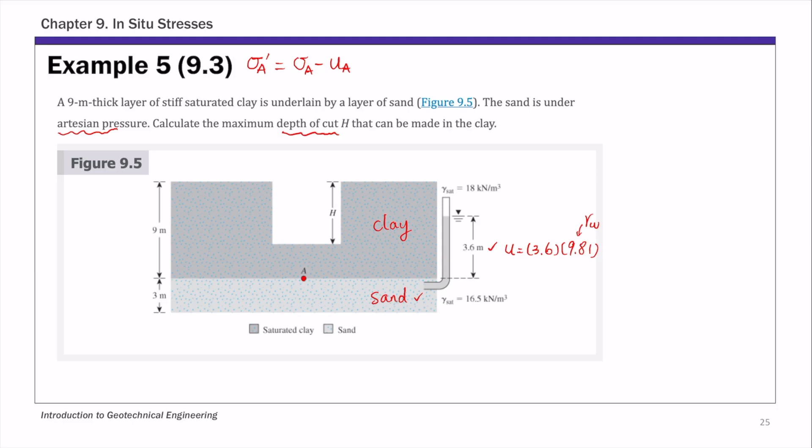which is basically 3.6 times 9.81. At the bottom of this excavation, as you remove soil on top, you're basically reducing this sigma A. So you're removing the weight on top, so sigma A decreases. And the pore pressure U A stays constant.